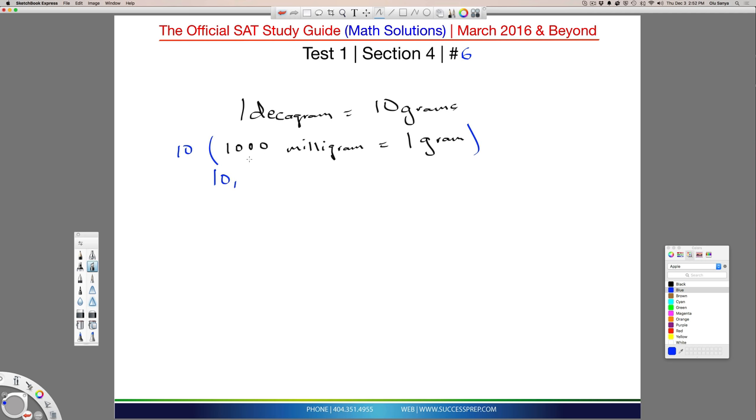This becomes 10 times a thousand, so 10,000 milligrams is now equal to 10 grams, just like the one decagram is.